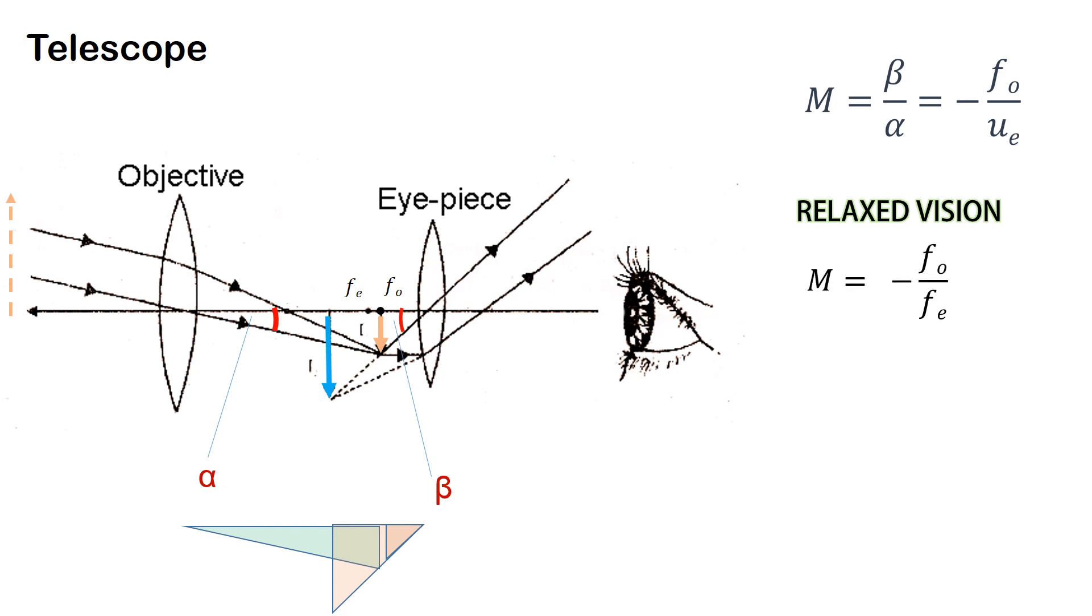So we find magnification in case of relaxed vision as minus fo upon fe and the length of the telescope as fo plus fe. Using the lens maker formula and substituting the value of ue in this equation here we get the magnification.